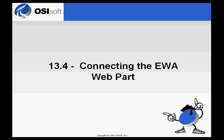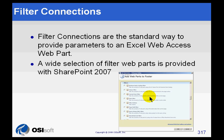Connecting the Excel Web Access Web Part. I mentioned a couple of times that the Excel Web Access Web Part supports connections — the normal Web Part connections that you would associate with any Web Part. One of the more common ways of using this is with filter connections, the standard way of providing parameters.